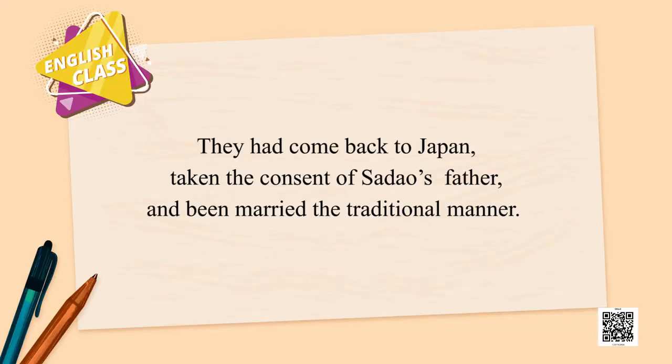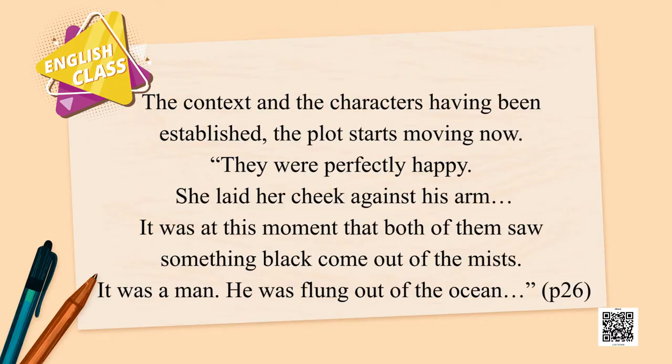This is something to keep in mind for later discussion. They had come back to Japan, taken the consent of Sadao's father, and been married in the traditional manner. So despite having lived in the US, both Sadao and Hana waited to return to Japan, seek the father's blessing and approval, and then got married. With the context and characters established, the plot now starts moving.